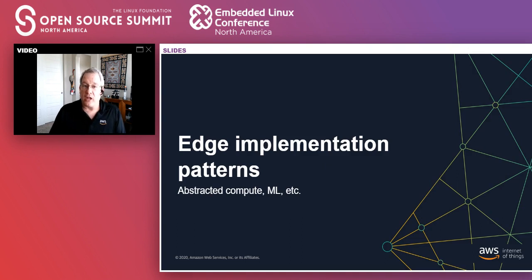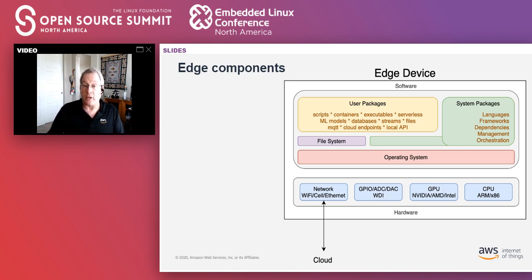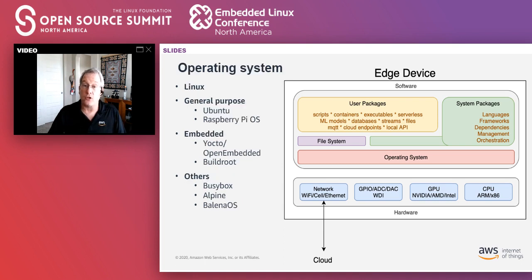What does an edge implementation actually look like? Starting from the bottom up, we've got hardware components, an operating system, system packages, and then our user packages — the orchestrated components that come back and forth from the cloud — that add business logic capabilities to whatever the device is. The hardware may include GPUs for machine learning, connections to fixed sensors, and different architectures — this is the common hardware you want to expose all the way up into your edge application.